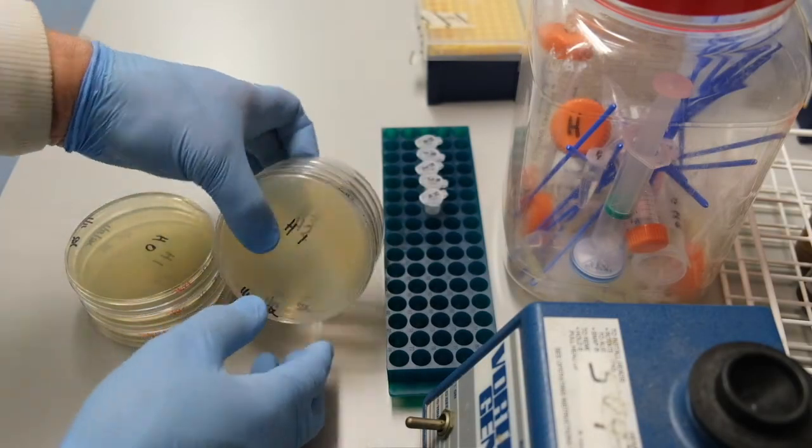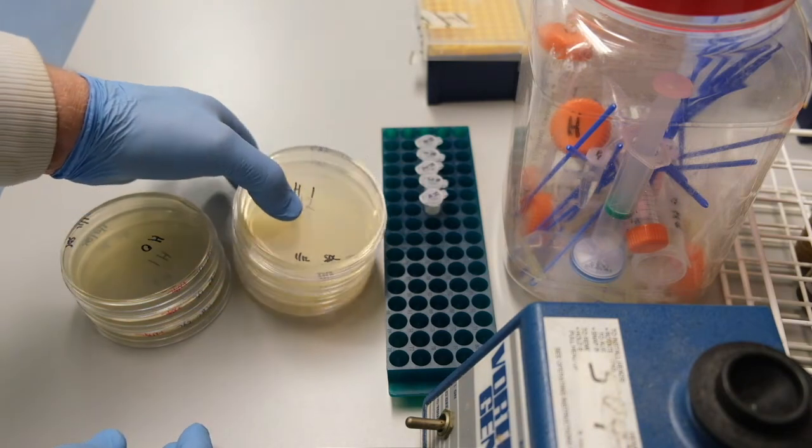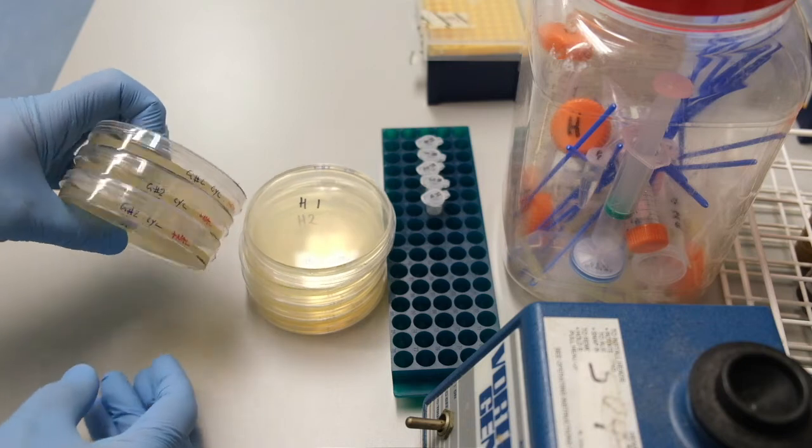For soil sample H, I only have three plates left with nalidixic acid, so I leave out the 10 to the minus 3 dilution.